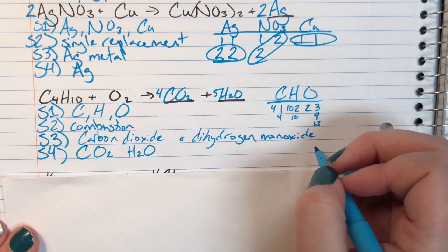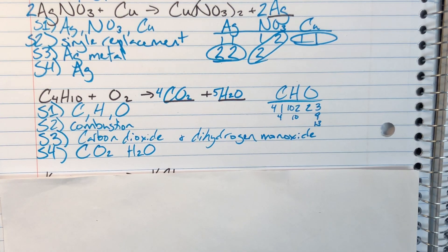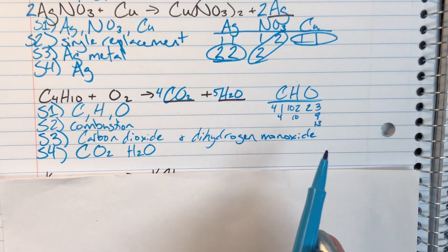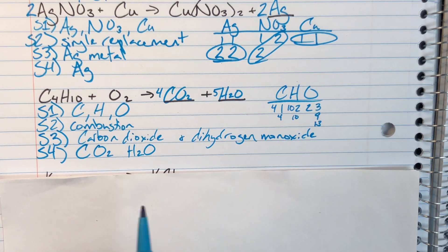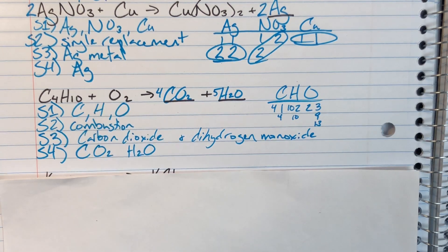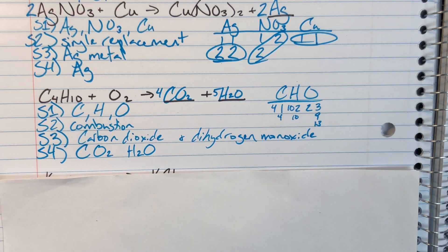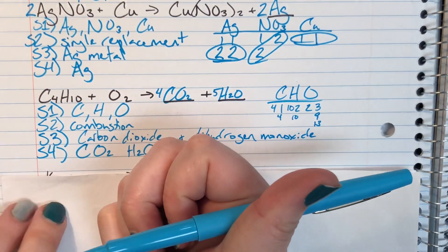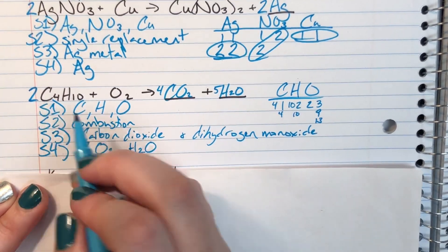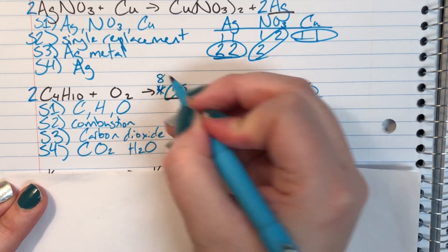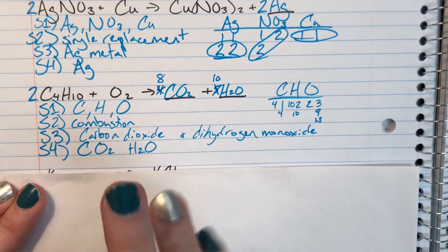Only oxygen is unbalanced, but I notice the left-hand side has an oxygen count of 2 and the right has an odd number — 13. This is a problem because I can't multiply 2 by any whole integer to get an odd number. To force the right-hand side to be even without changing carbon and hydrogen, I multiply all coefficients by 2.